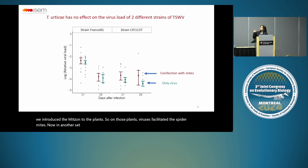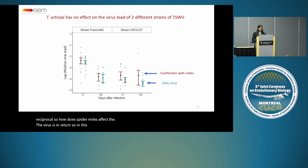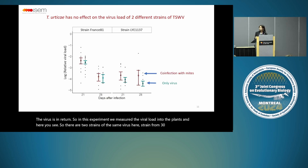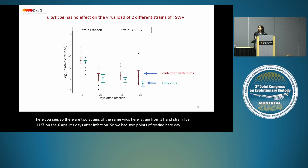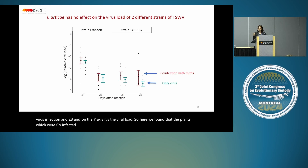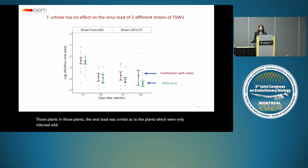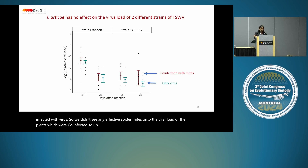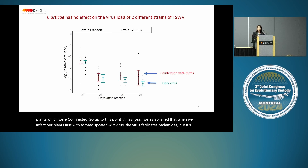In another set of experiments, we tested if the facilitation is reciprocal — how do spider mites affect the viruses in return? We measured the viral load in the plants. Here there are two strains of the same virus: strain Franca T1 and strain LIE 1137. On the x-axis is days after infection — we had two time points, day 21 and day 28 after virus infection. On the y-axis is the viral load. We found that plants which were co-infected — first with viruses and then with spider mites, shown in red — had similar viral load as plants infected with virus only. So we didn't see any effect of spider mites on the viral load. The virus facilitates spider mites, but it's not reciprocal — the virus doesn't get any benefit in return.